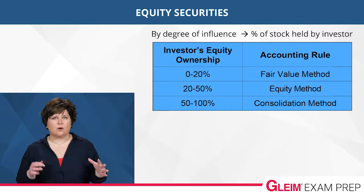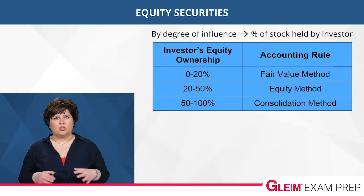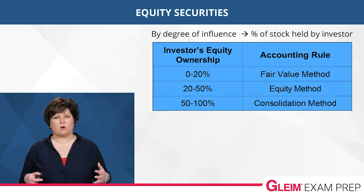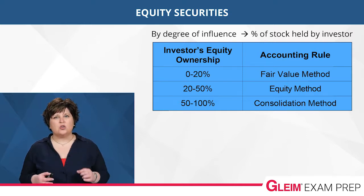If you own 0–20% of the stock of the other company, you really don't have much influence or control over the other company. In this case, you will use the fair value method.